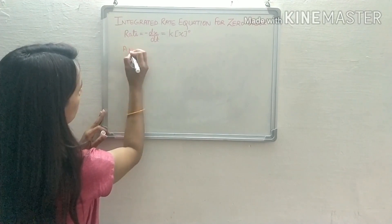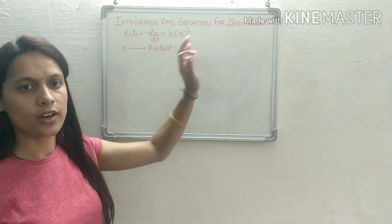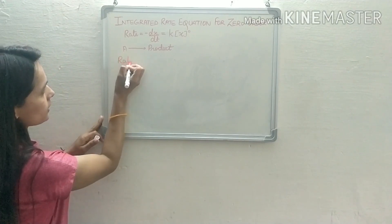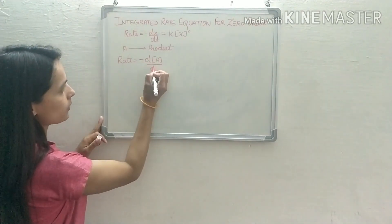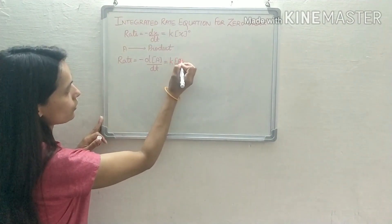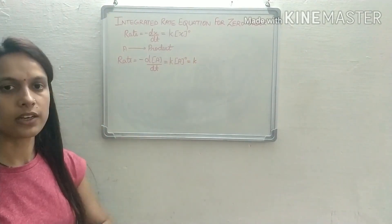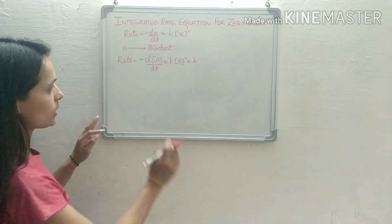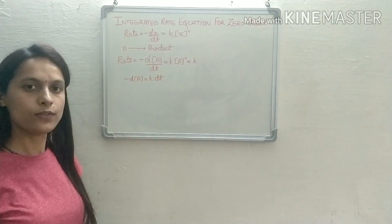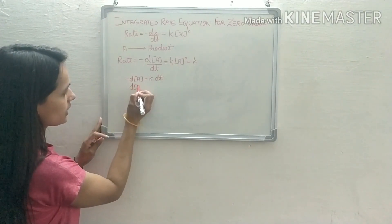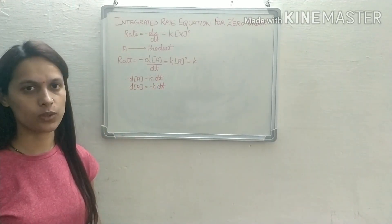Let us consider the general reaction: A gives product. This is a zero order reaction. According to the definition, rate equals minus d[A]/dt equals k into [A]^0, which equals only the rate constant k. Now if we rearrange the equation, we get: minus dA equals k dt. On further rearrangement, we get dA equals minus k dt. This is our differential rate equation.